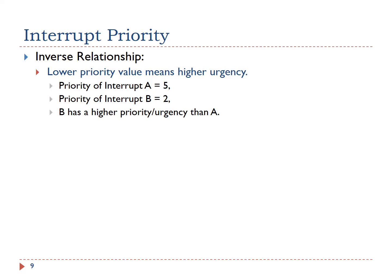What should the processor do if multiple interrupts arrive at the same time? ARM processors allow software to set priority levels for almost every interrupt, so interrupts needing more urgent response will be serviced quickly. For ARM Cortex processors, numerically low priority values specify logically high interrupt priorities — a lower priority value represents a higher urgency. This is counterintuitive.